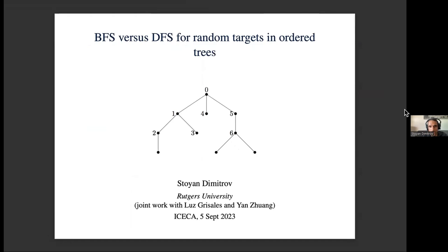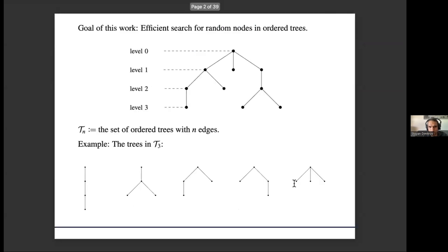It's a joint work with these two people you see—with Grisales and Zhuang. So it's again about trees and in particular ordered trees. Here all of us know what these are. We have some ordering of the children for each node.